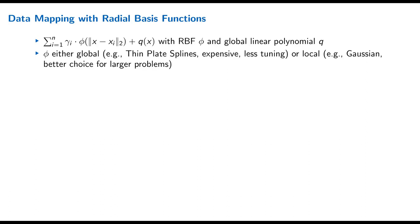If you want a second-order accurate method but don't have mesh connectivity, data mapping with radial basis functions (RBF) is the way to go. We construct an interpolation function on one mesh and sample it on the other. This interpolant is built from a linear combination of many RBFs phi and one global linear polynomial q. RBFs can be global functions (e.g., thin-plate splines) — very expensive but no tuning needed — or local functions (e.g., Gaussians), which are better for larger problems but require tuning the support radius.